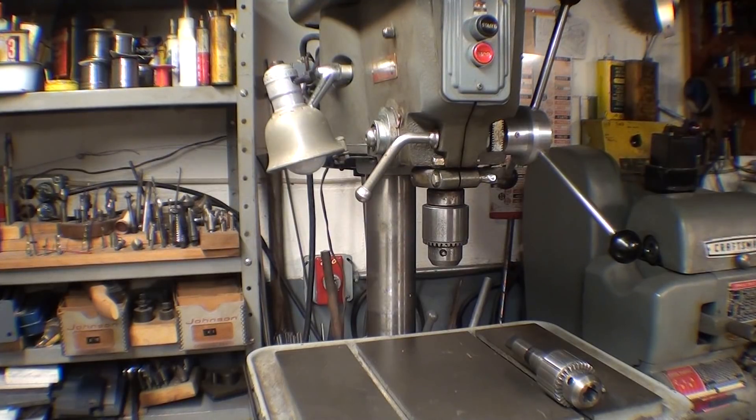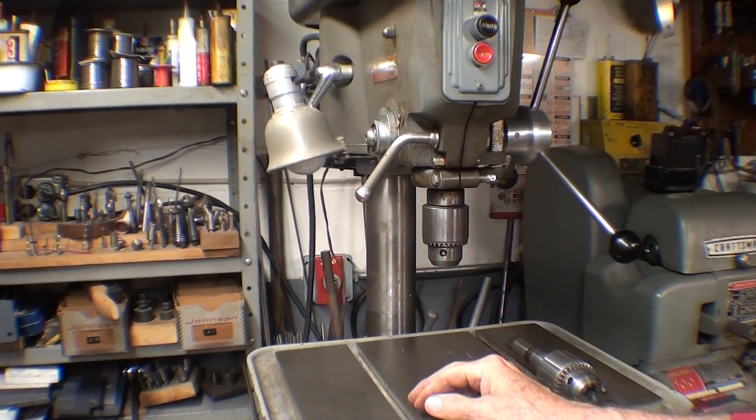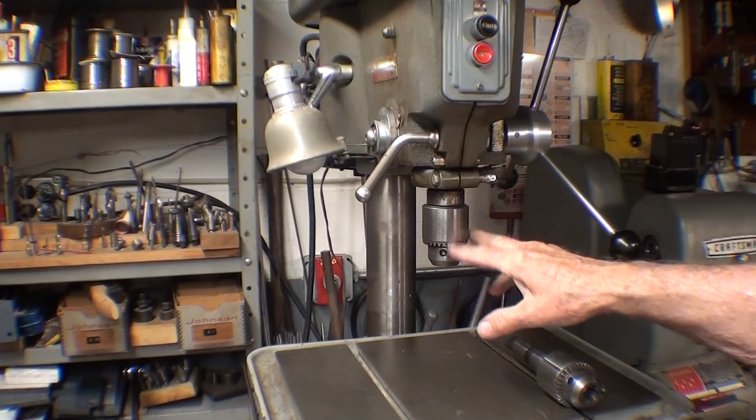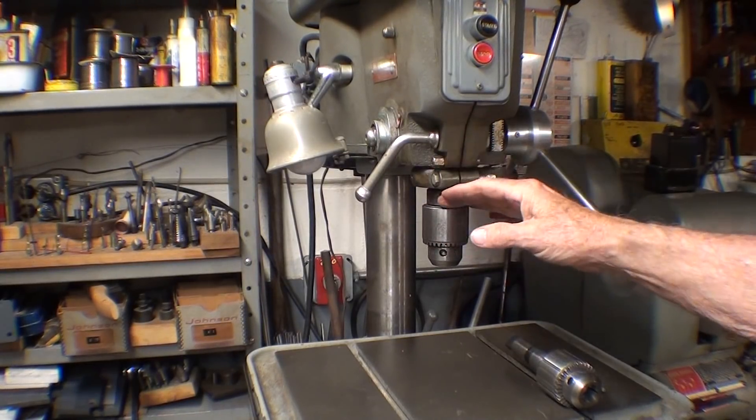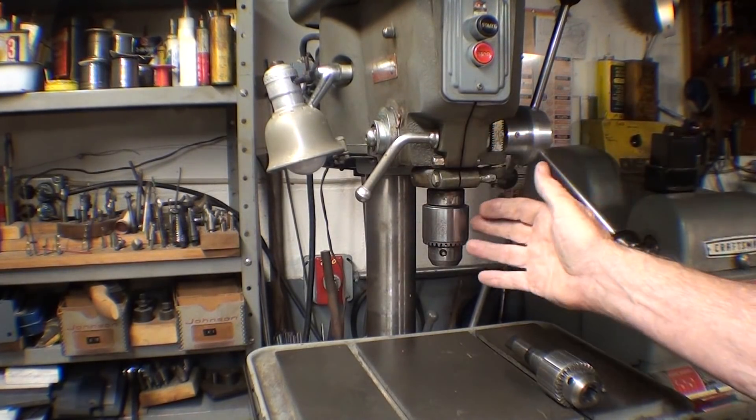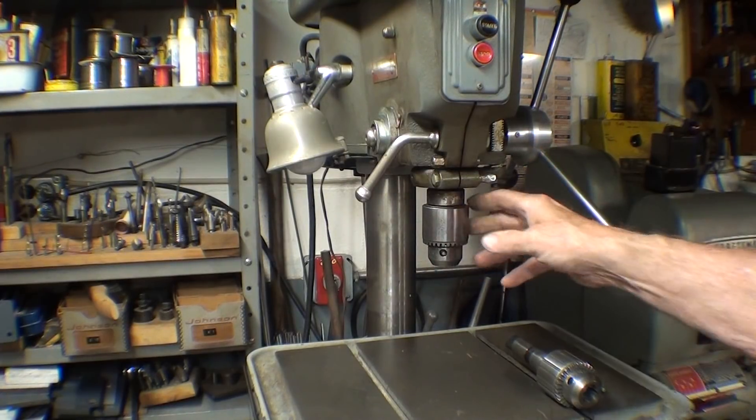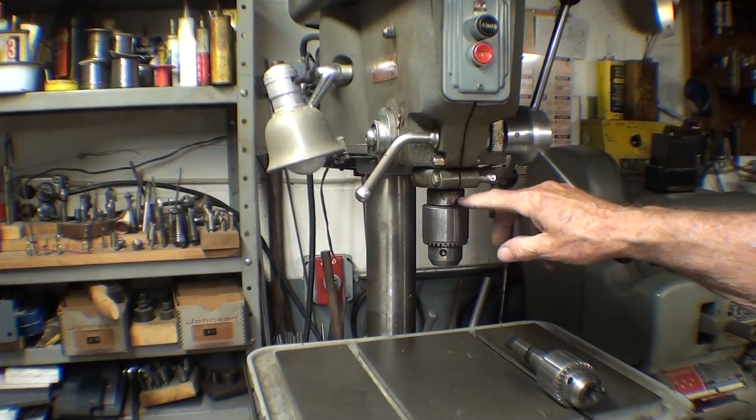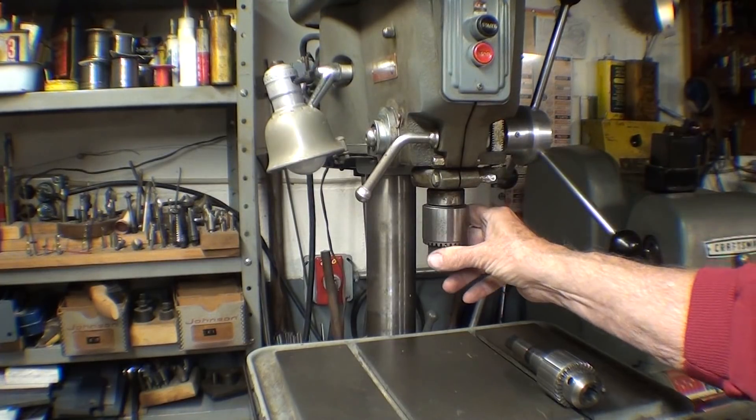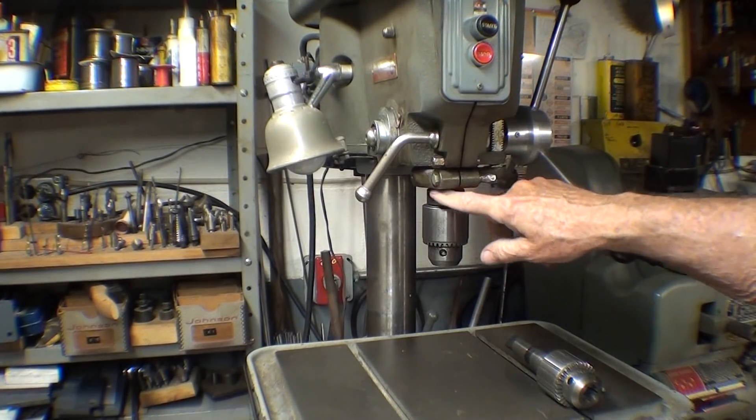Howdy, it's Tubal Cain. Welcome back to the shop. Today's video is concerned with how to remove a chuck from the spindle of the drill press. I have five drill presses here, and all of them have this type of chuck that is held on, or I should say fastened in place with a threaded collar.